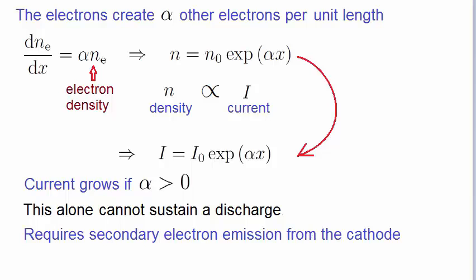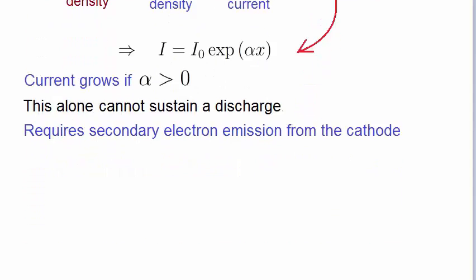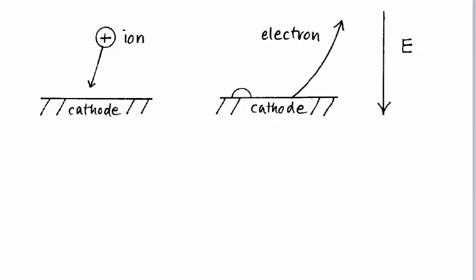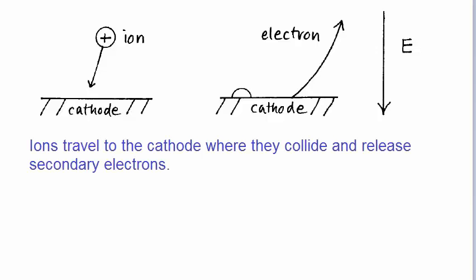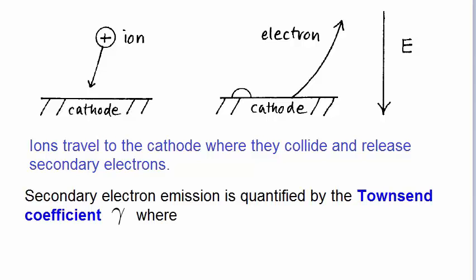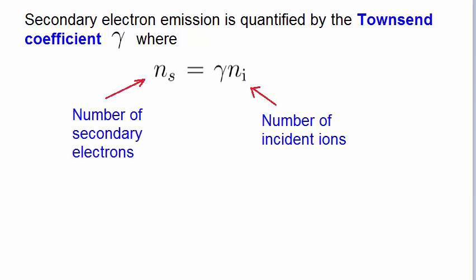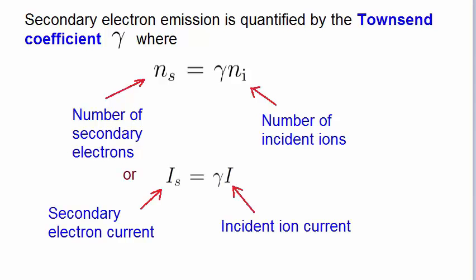The source of the electrons is actually the cathode. As ions are created in the plasma, they accelerate towards the cathode, and when they strike the cathode, they can release an electron called a secondary electron. Secondary electron emission is quantified by the so-called Townsend coefficient, gamma, where the number of secondary electrons produced is directly proportional to the number of incident ions on the cathode. That constant of proportionality is gamma, the Townsend coefficient. We can equally write this equation in terms of currents—that is, on the left hand side, the secondary electron current Is is equal to gamma times the incident ion current I.